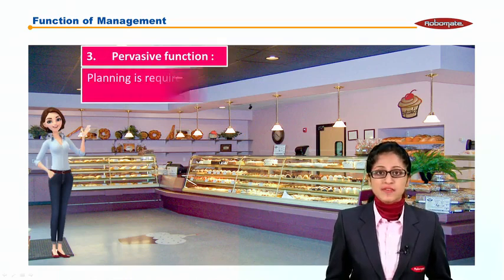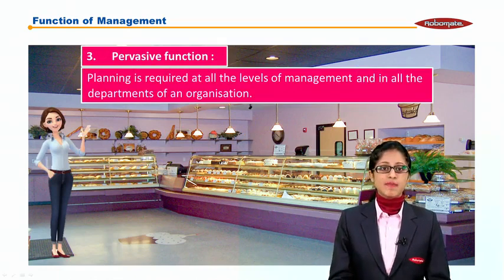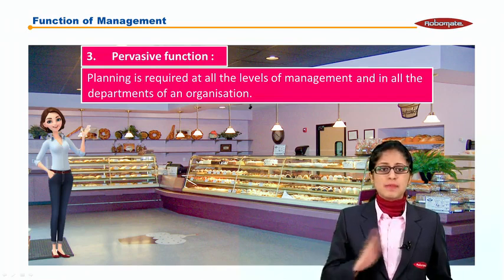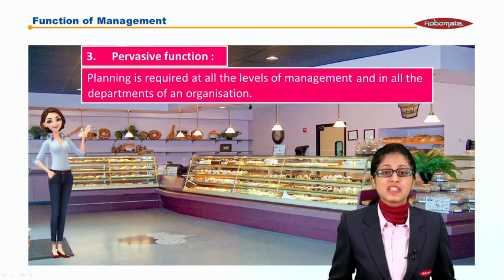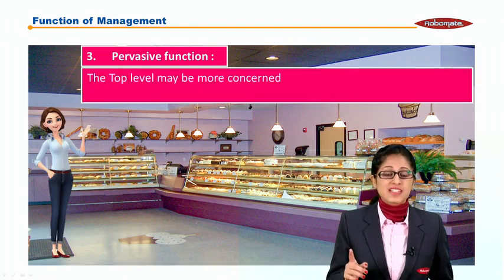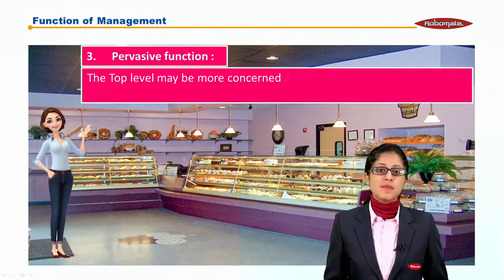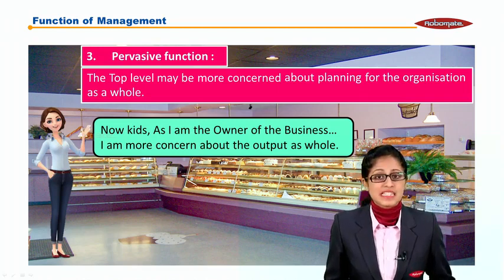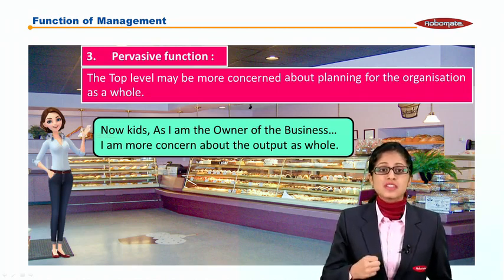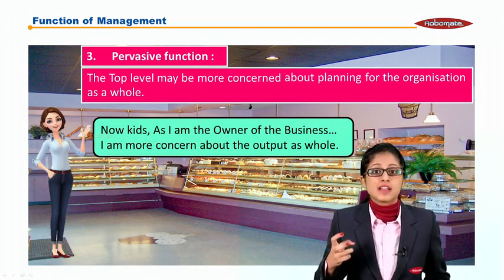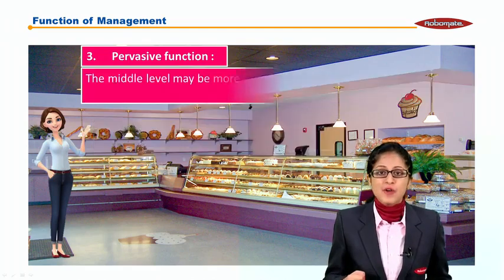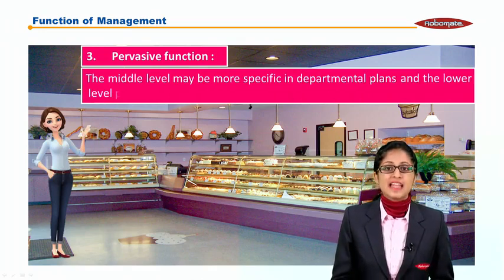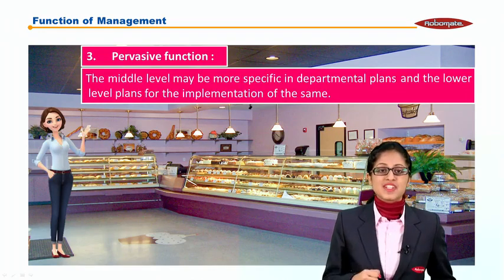The third nature of planning is that it is a pervasive function. Planning is required at all levels of management and in all departments of the organization. Every department has to plan out its activities. The top level may be more concerned about planning for the organization as a whole — as Annie, the owner, is more concerned about the overall output. The middle level may be more specific in departmental plans, and the lower level for the implementation of the same.